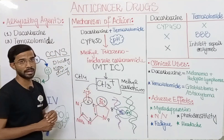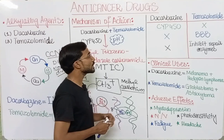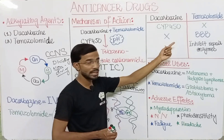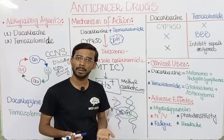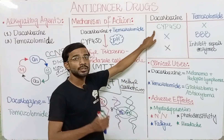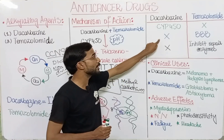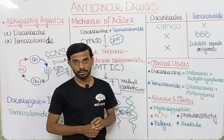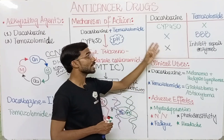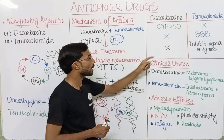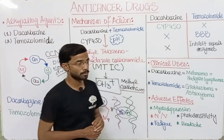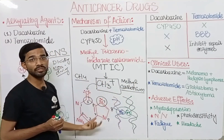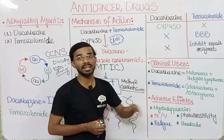In summary, the main mechanism of dacarbazine and temozolomide is: alkylation of guanine → DNA cross-linking → blocked replication → stopped tumor cell division. Key differences: dacarbazine requires CYP450 for activation; temozolomide requires normal pH. Dacarbazine does not penetrate the brain, but temozolomide can cross the blood-brain barrier, which is why it is used to treat brain tumors.